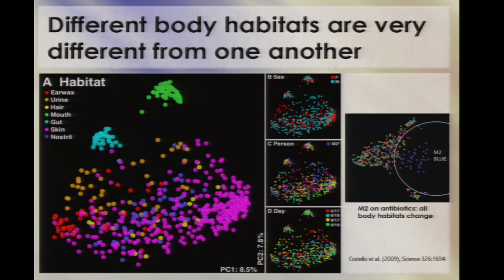Liz Costello, who was in my lab at the time and now works with Dave, put together this first overall body site map. I'm showing this again to point out that we can use this display to figure out which variables are important in the same dataset. You can immediately see a lot of clustering by body site — the mouth and gut are very distinct from the skin. When we take the same samples and color them by sex, by person, or by day, we see much less separation by those variables, although antibiotics have a large enough effect to be visible even on the scale of different human body sites.